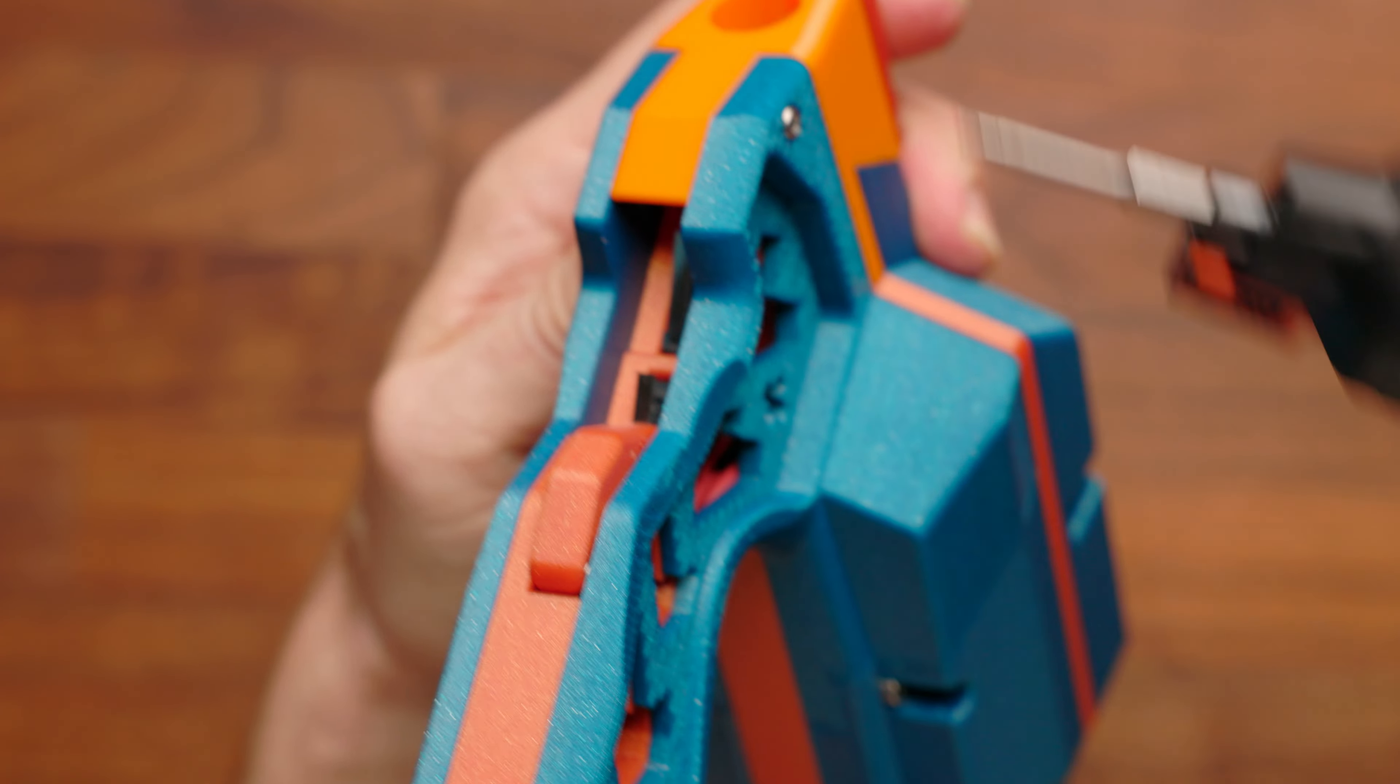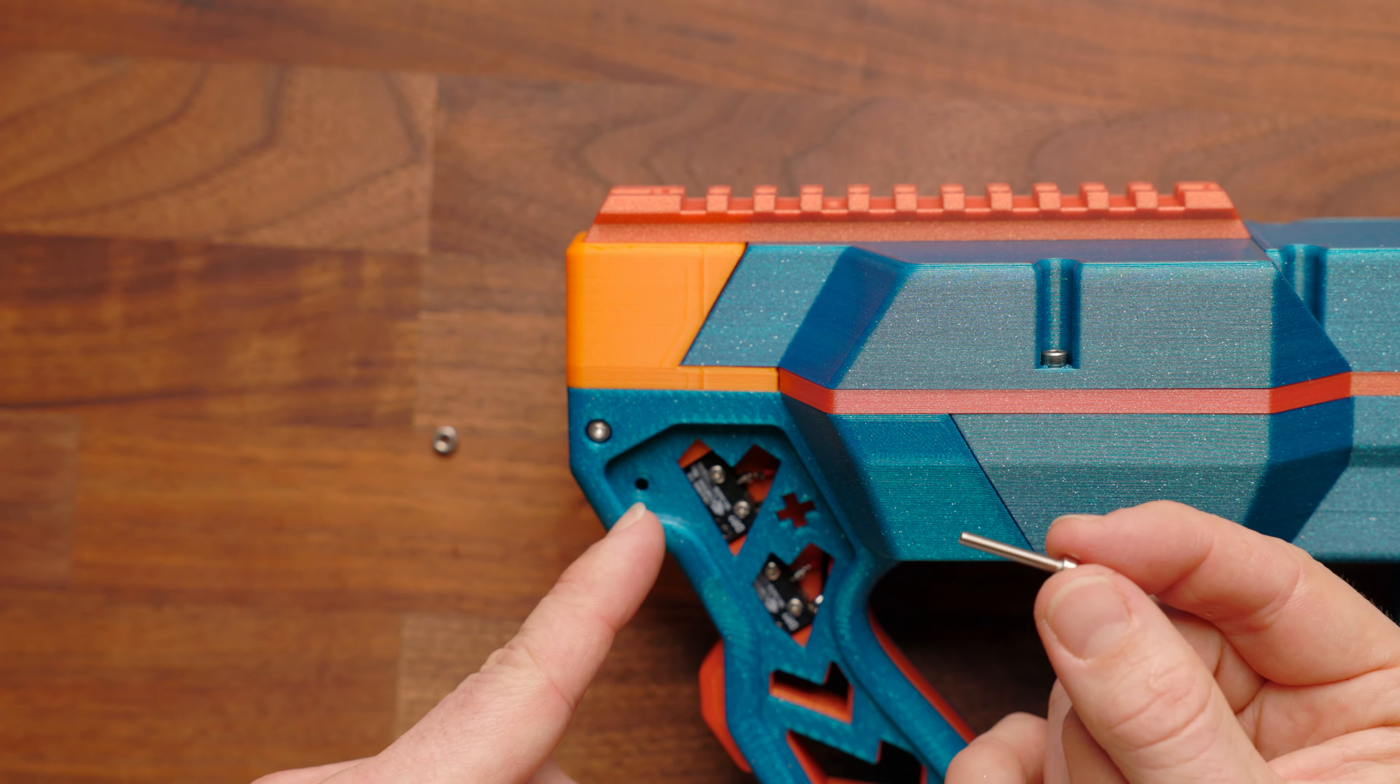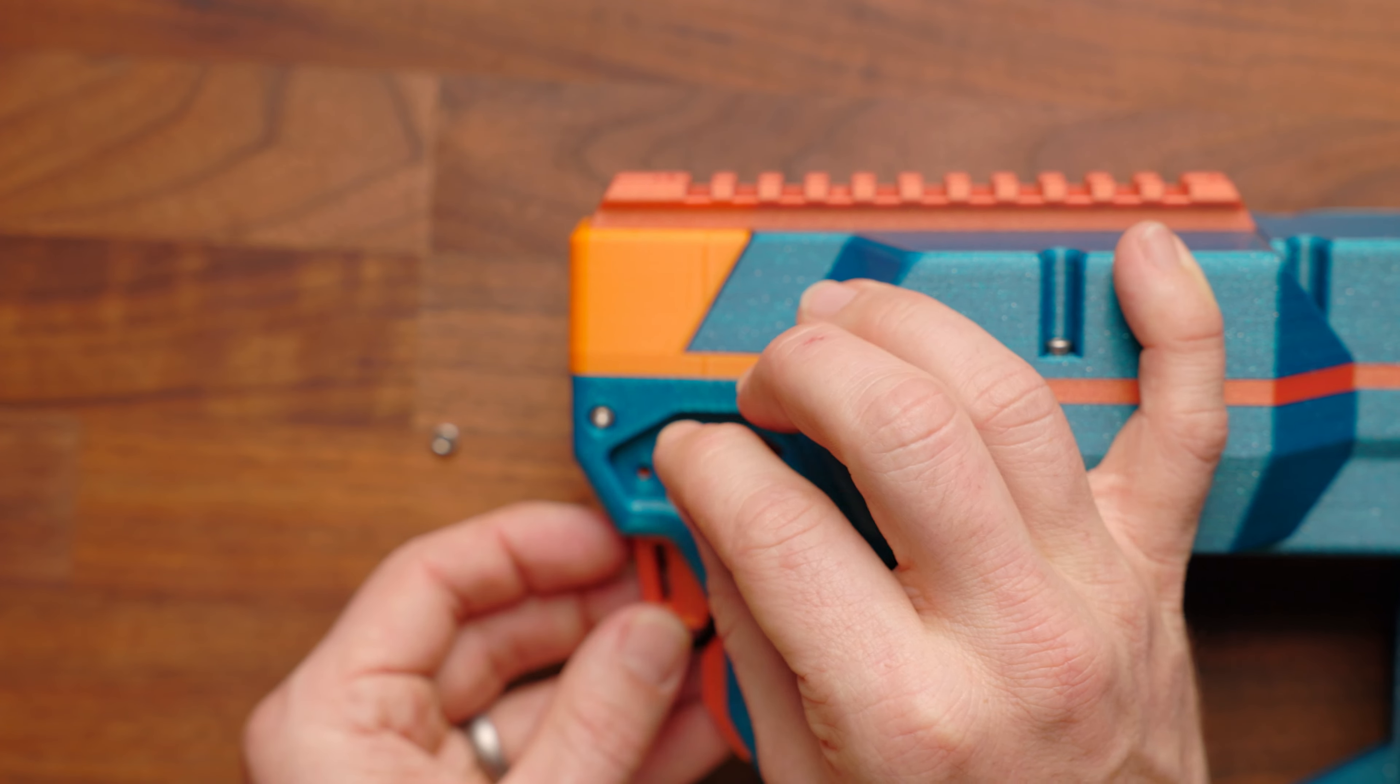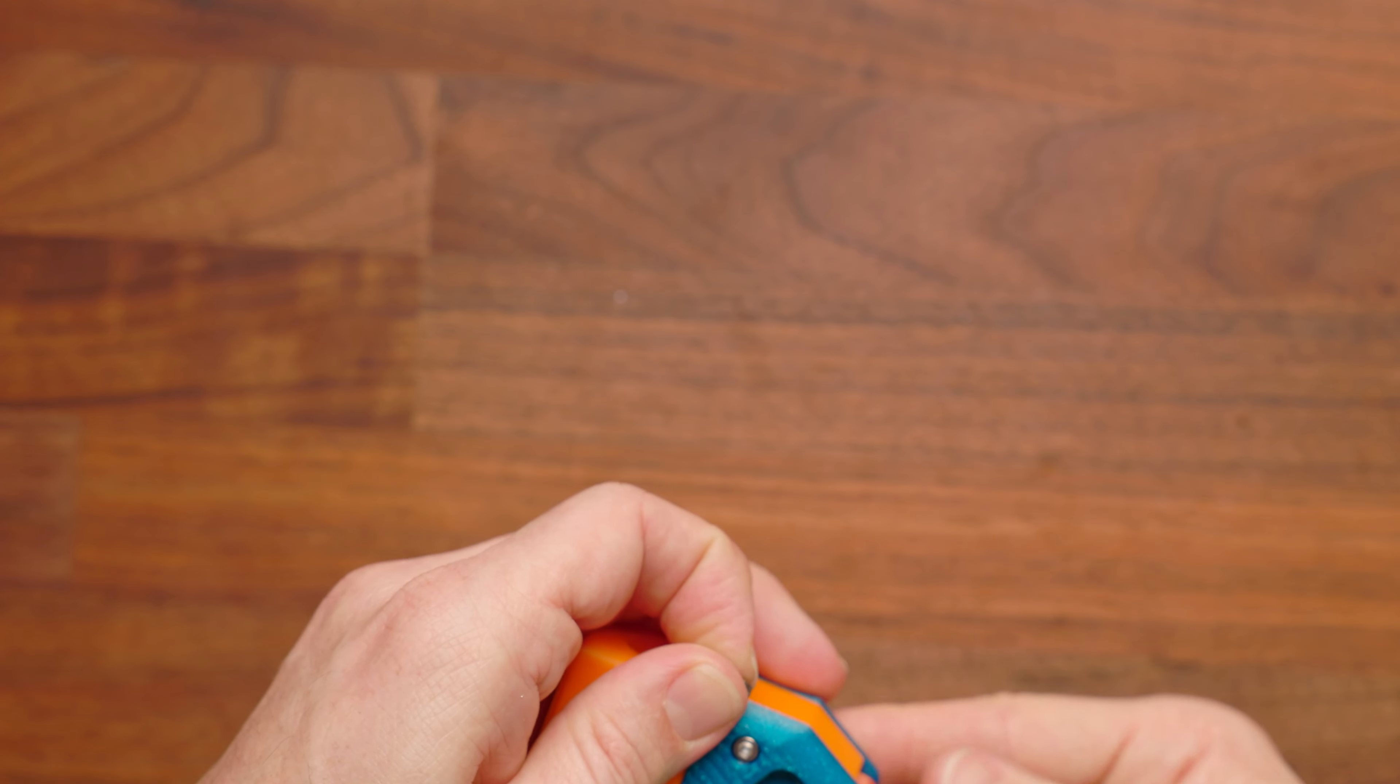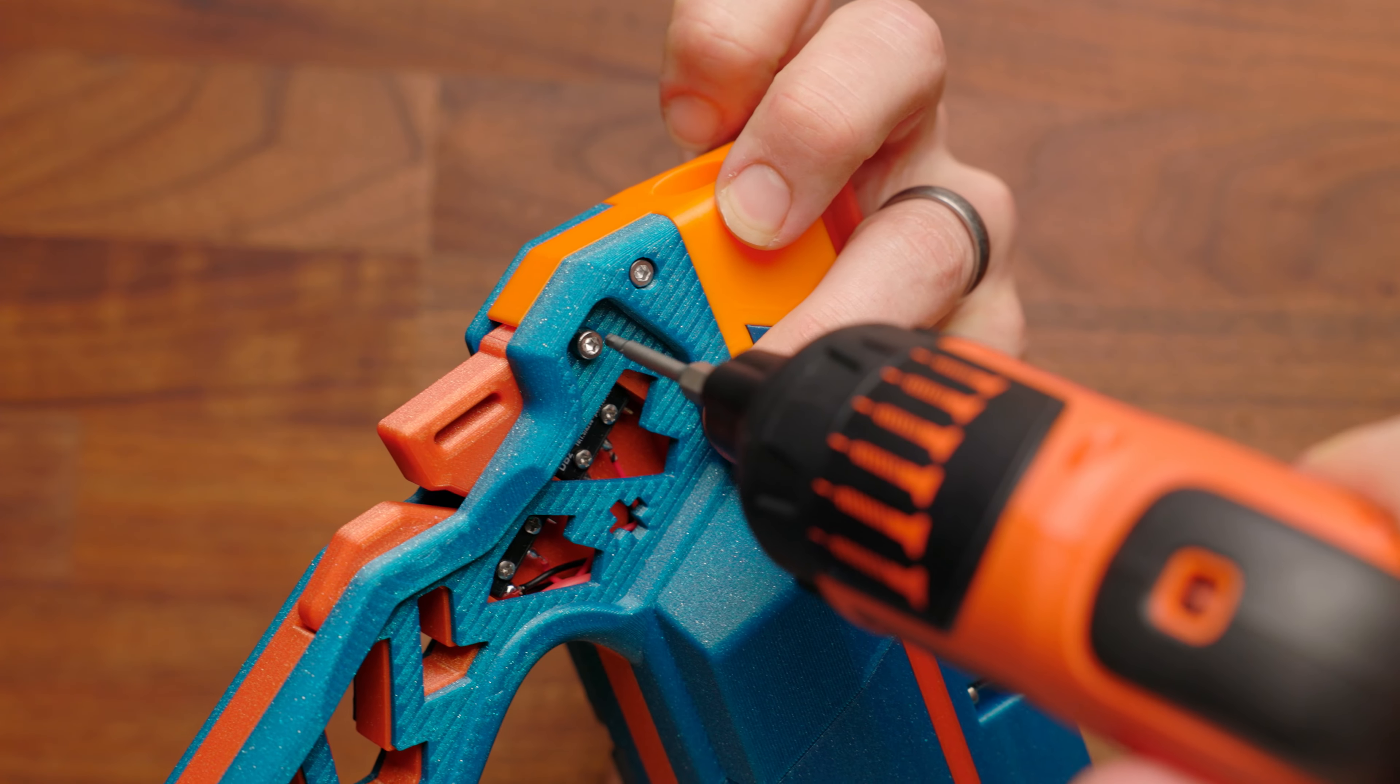Now we're going to install the trigger, and you're going to take an M3 by 20 screw, and you're going to go through this hole here, and there's going to need to be a hex nut, the one hex nut for the build on the other end. So feed this through, and then on the other side, we should see the screw come out. We're going to get that hex nut on there, and we will tighten that in place.